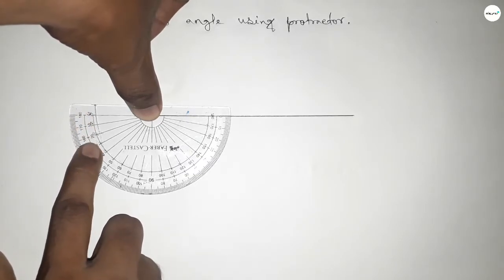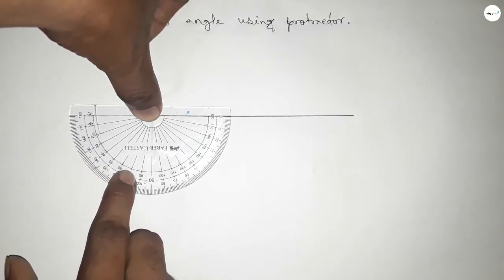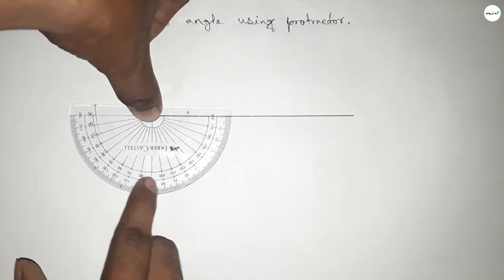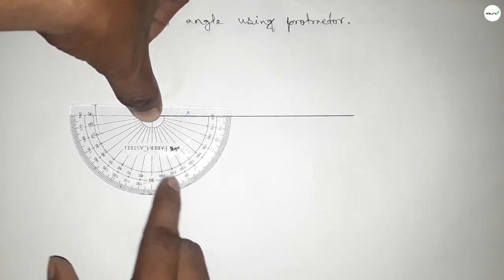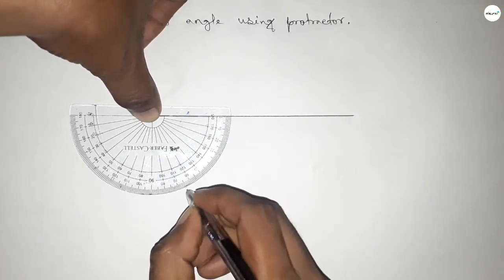And this is 10, 20, 30, 40, 50, 60, 70, 80, 90, 100, 110, and this is 115. So by adding 115 degree angle with 180 degree, then we can get 295 degree angle.